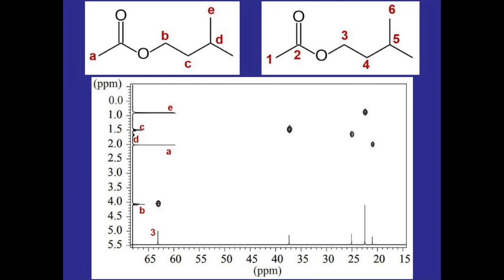Then simply moving up, you can look at the signal being produced by hydrogen A and draw a line out to the dot that's directly to the right, and then draw a line down. That signal would be produced by the carbon that's directly bonded to hydrogen A, so that would be carbon one.